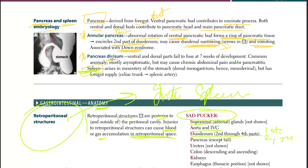Second, pancreas divisum: the ventral and dorsal parts fail to fuse at seven weeks of development. It is a common anomaly, mostly asymptomatic, but may cause chronic abdominal pain or pancreatitis. Because the two structures secrete separately, there is a higher chance of chronic pancreatitis.